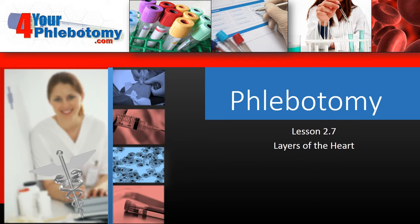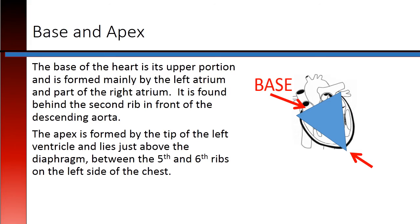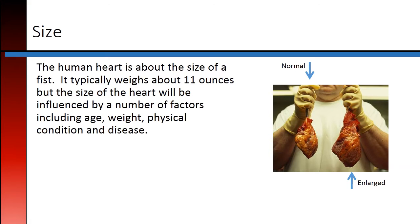Phlebotomy lesson 2.7: layers of the heart. The base of the heart is its upper portion and is formed mainly by the left atrium and part of the right atrium. It is found behind the second rib, in front of the descending aorta. The apex is formed by the tip of the left ventricle and lies just above the diaphragm, between the fifth and sixth ribs on the left side of the chest.